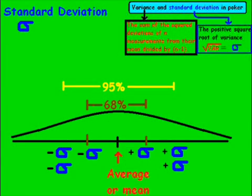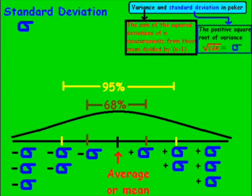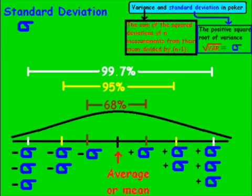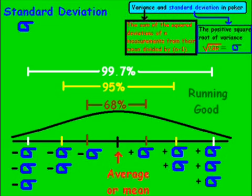Next, we're going to look at two standard deviations, highlighted in yellow. Two standard deviations will cover 95% of the data, which means 5% of the data can fall outside that. The next thing we look at would be three standard deviations — three minuses and three pluses — which covers approximately 99.7% of the data, essentially covering all of it except for a few outliers.